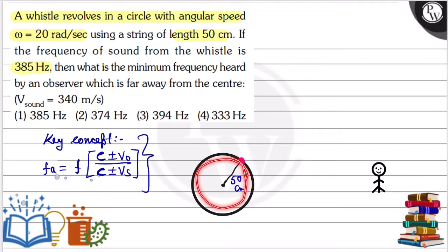Suppose this is clockwise. The particle will be here when the observer is far away, and maximum speed will be here.